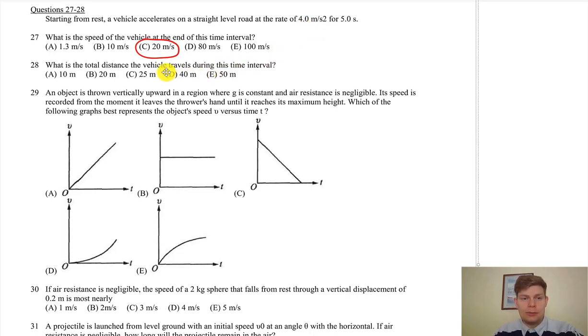It went from zero to 20, so on average it was going 10 meters every second because 10 is the middle between 0 and 20. So it went for five seconds, so 10 times 5 is 50, because it was going average velocity of 10 meters per second for five seconds. 10 times 5, 50.